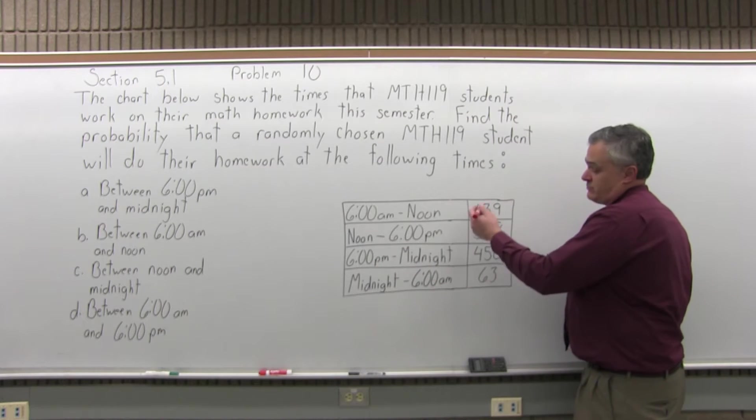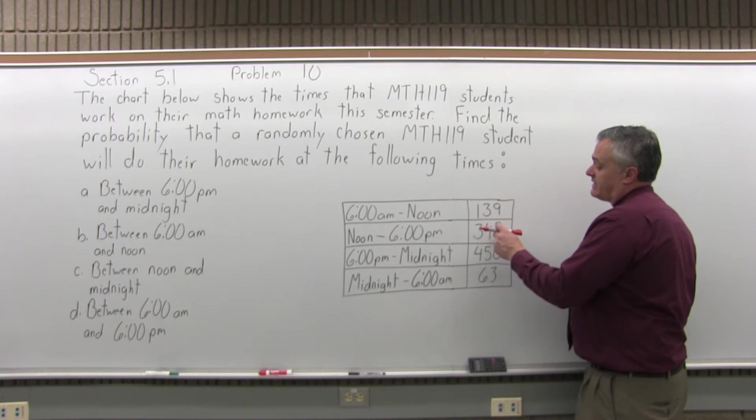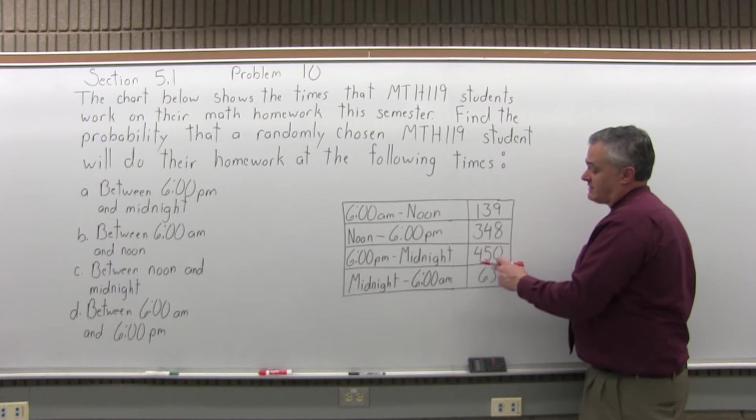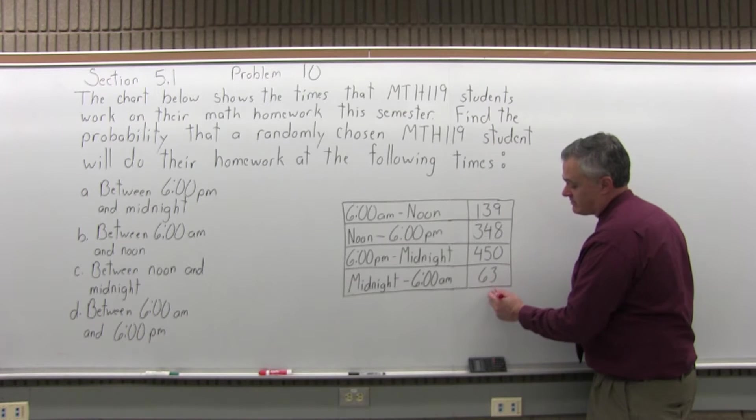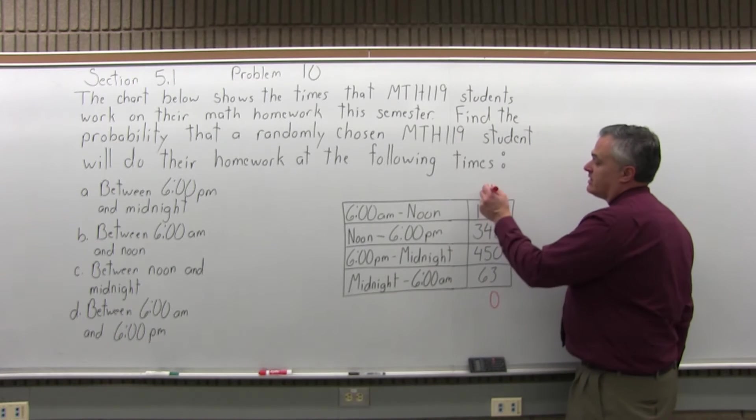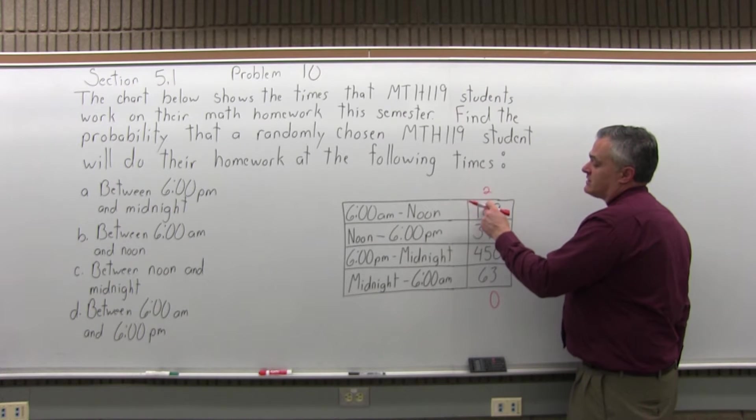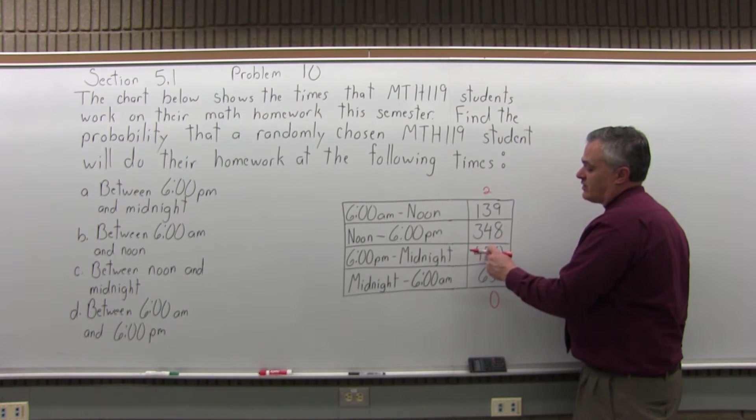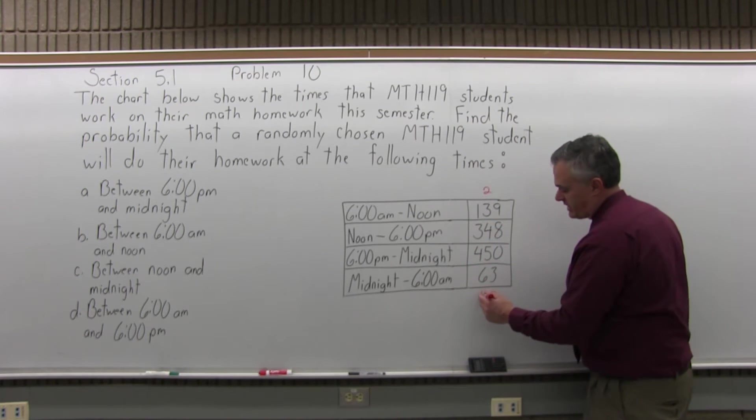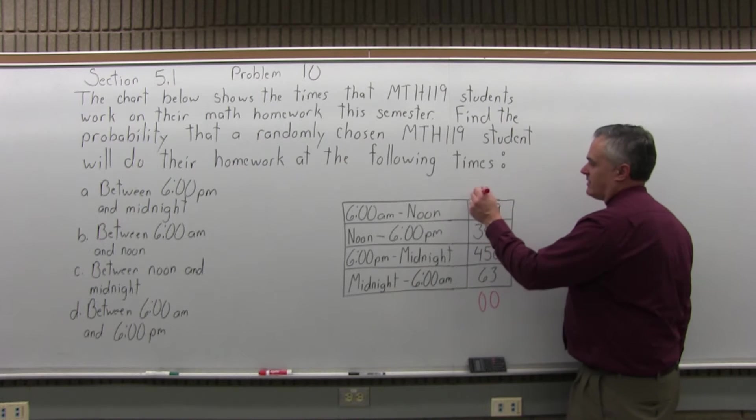So let's add, get a total of all these. Okay, 9 and 8 is 17, 17 and 0 is 17, 17 and 3 is 20. So put down the 0, carry the 2. 2 and 3 is 5, 5 and 4 is 9, 9 and 5 is 14, 14 and 6 is 20 again. Put down the 0. Once again, carry the 2.